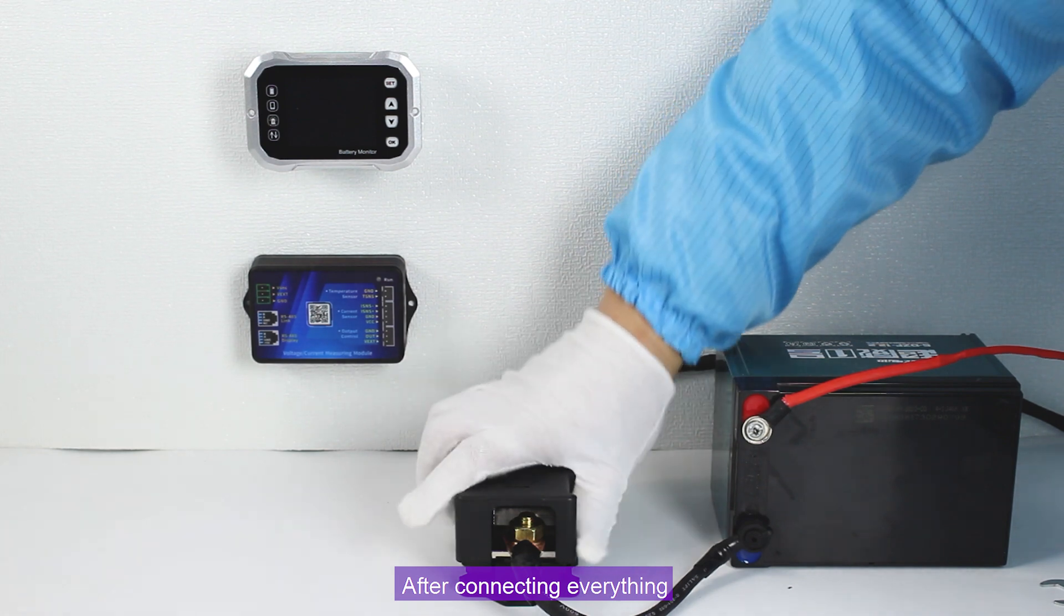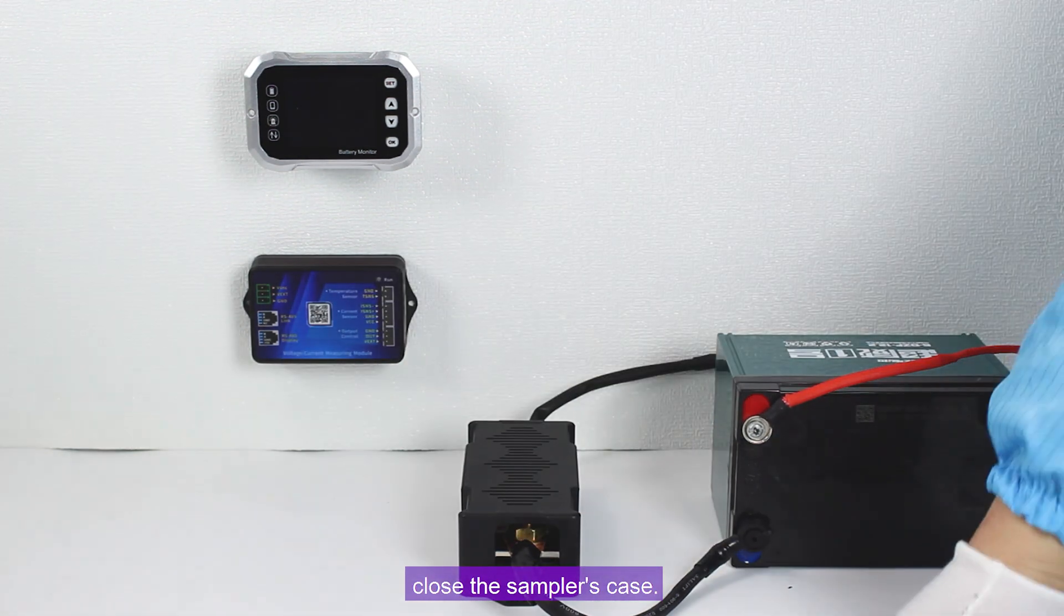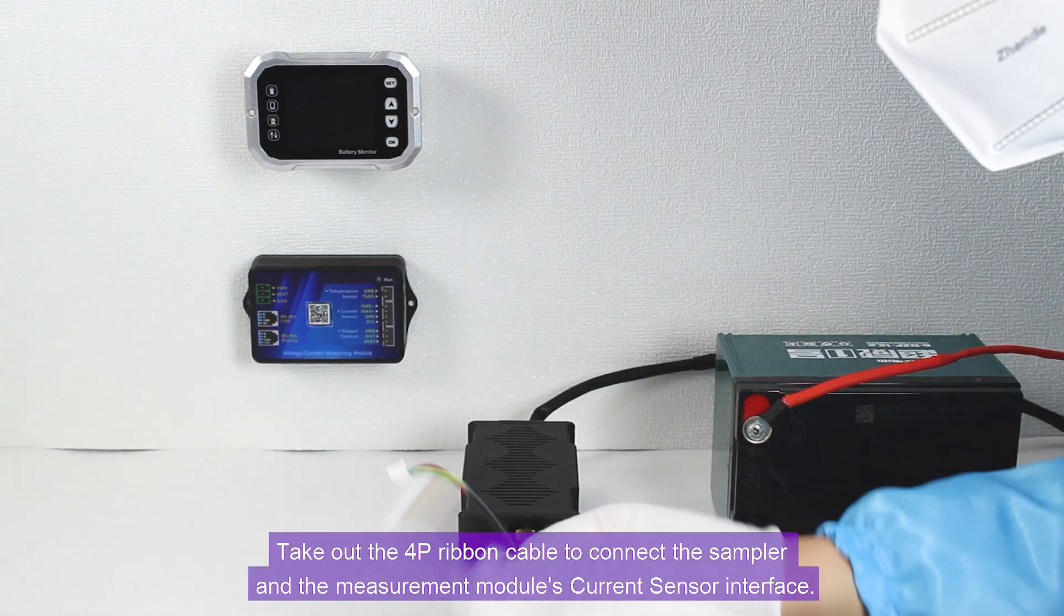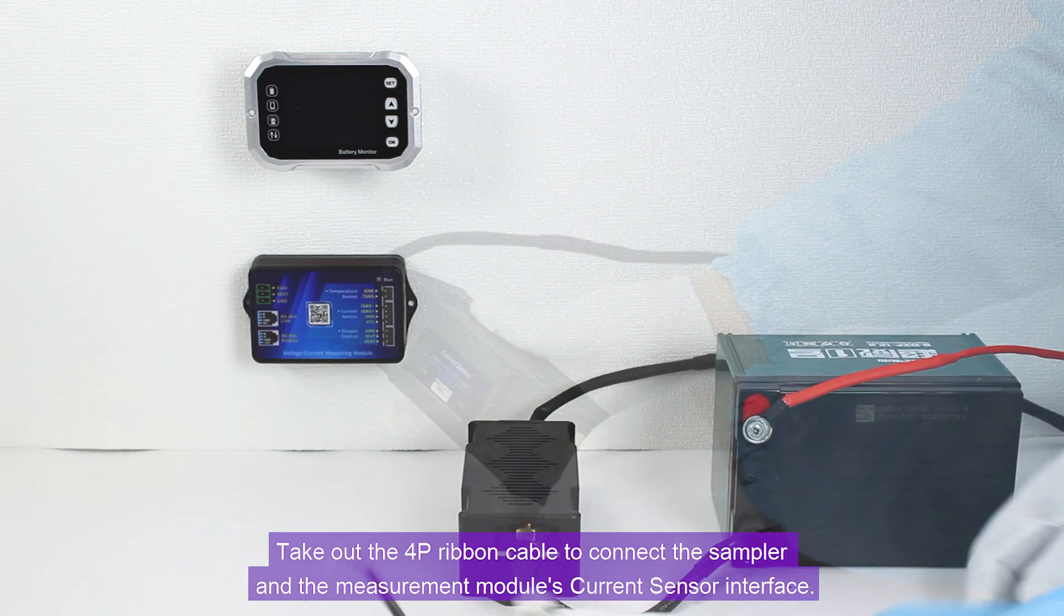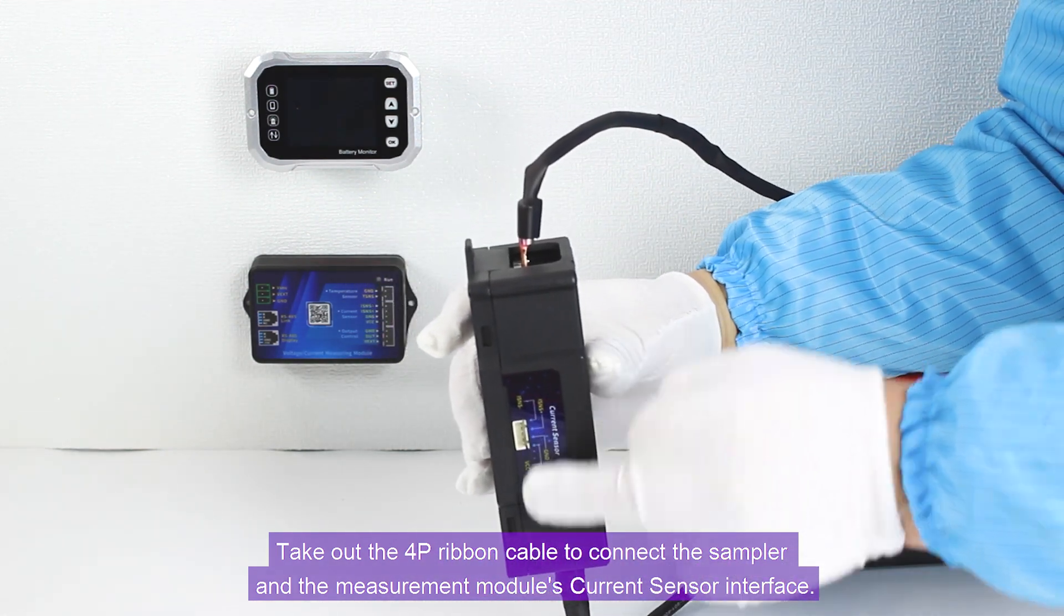After connecting everything, close the sampler's case. Take out the 4P ribbon cable to connect the sampler and the measurement module's current sensor interface.